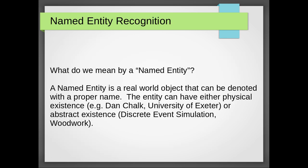So let's start with named entity recognition. A named entity is a real world object that can be denoted with a proper name. It can have a physical existence — for example, Dan Chalk or the University of Exeter — or a more abstract existence. Concepts like discrete event simulation, or subjects like woodwork and cookery, are examples of abstract named entities. These are the sorts of things we want to extract when undertaking named entity recognition.